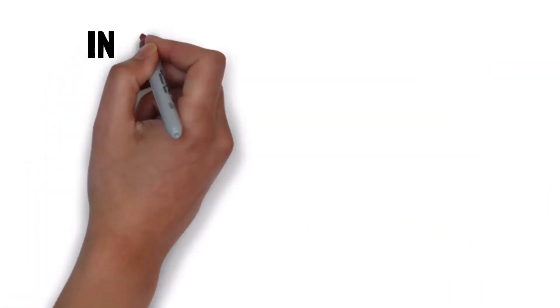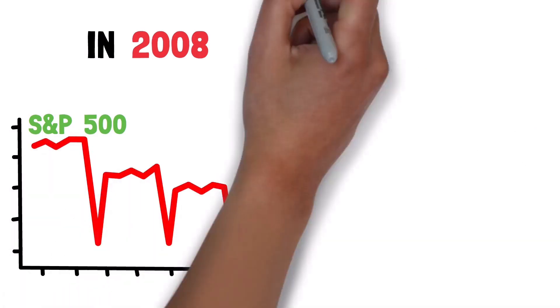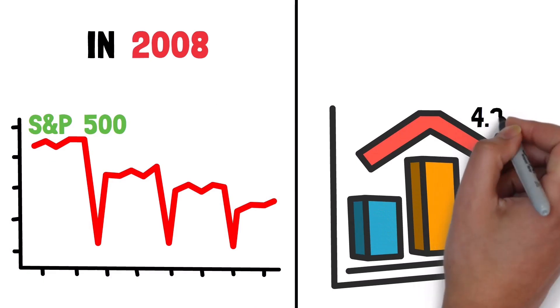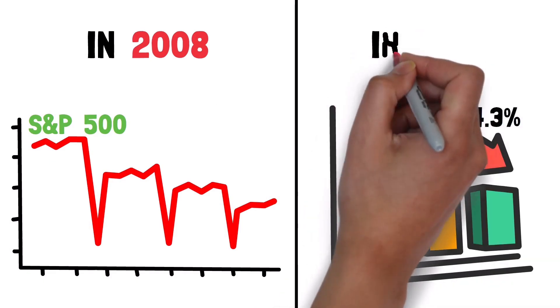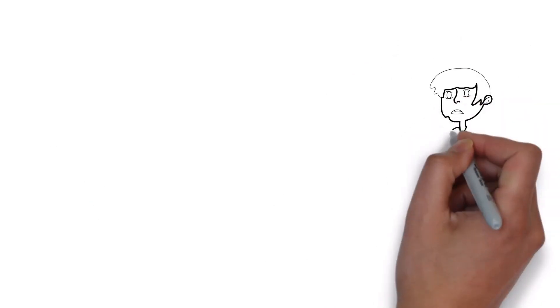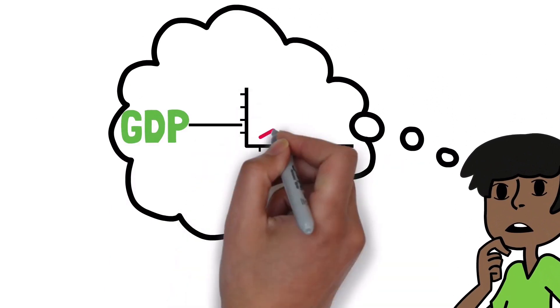In 2008, for example, the S&P 500, the stock market, lost 40%. But that same year, the US GDP was down only 4.3%. And in the next year, in 2009, the US GDP was down 2.5%. It's crazy. You would think that the GDP was a lot more connected to the stock market, but it's not.